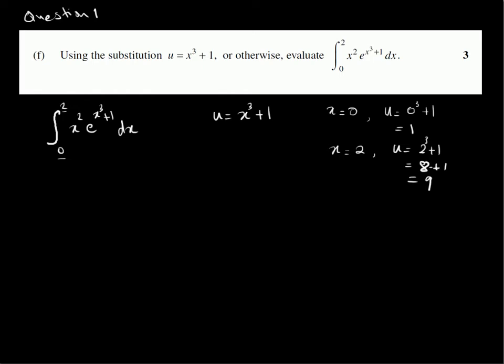Okay, the derivative of this, du dx, is 3x squared, because we bring the 3 down and we minus 1 from the index. So, du dx is 3x squared. In other words, du is 3x squared dx.